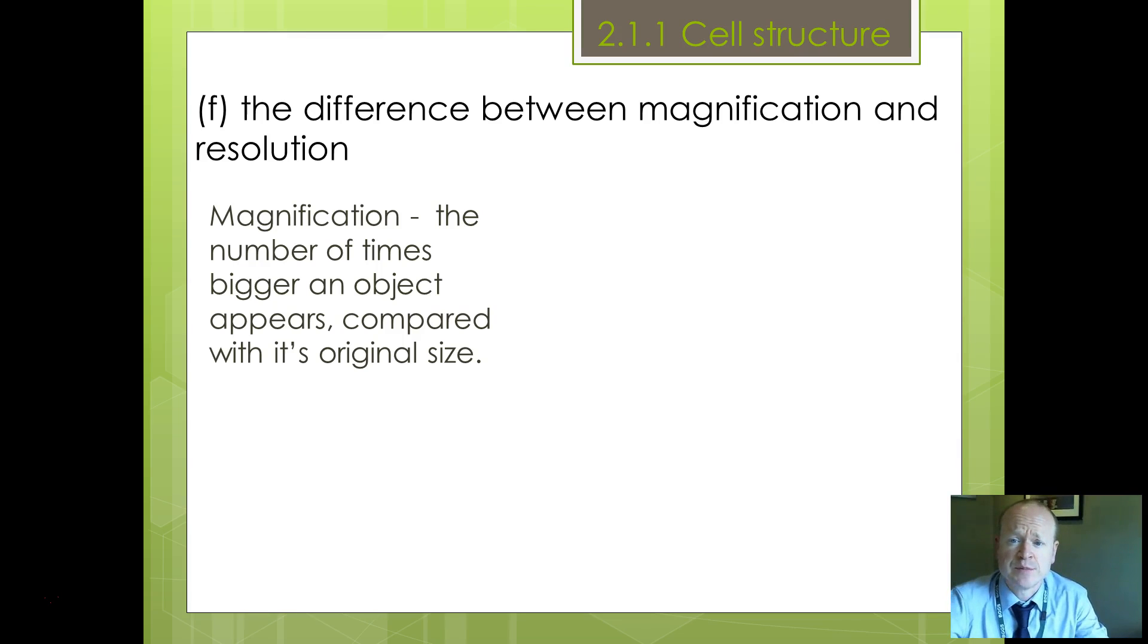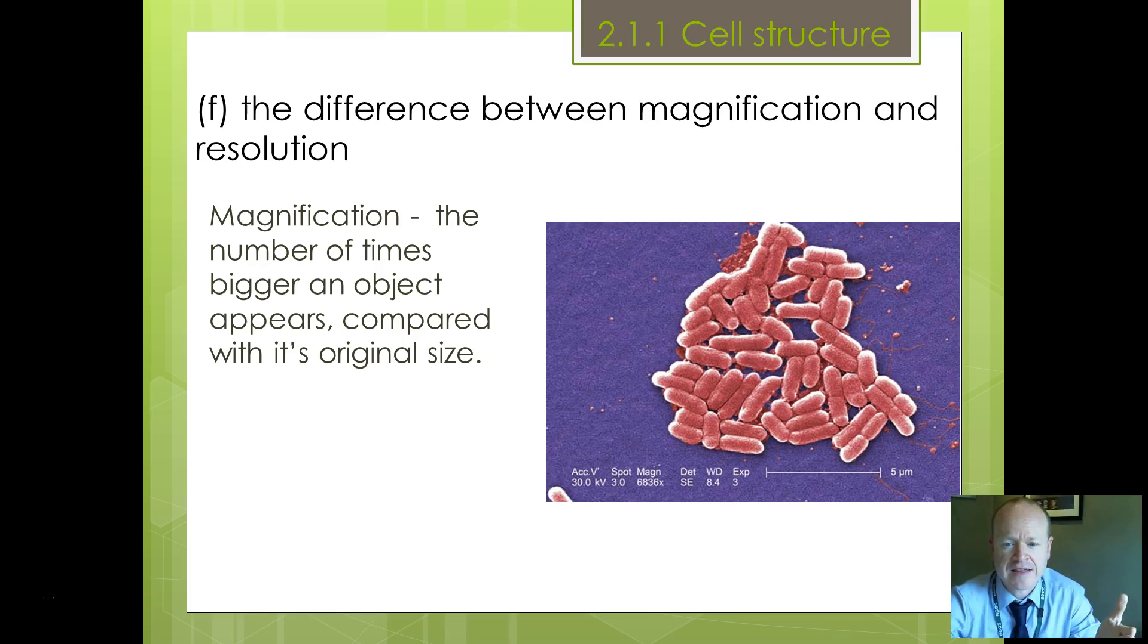Let's look at the difference between magnification and resolution. Magnification is the number of times bigger an object appears compared to its original size. To magnify something like these bacteria shown here, you've got to make them appear bigger. They're not actually getting bigger, you're just using something to make them look bigger. You can't see them with the naked eye, but you use a microscope and you can see them.